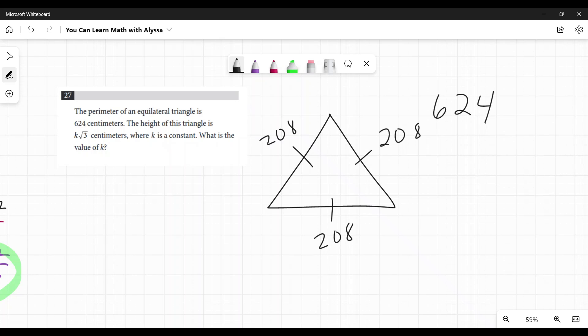The height of this triangle is K square root of three centimeters where K is a constant. What is the value of K?